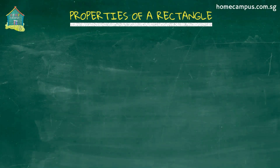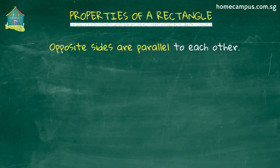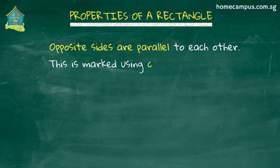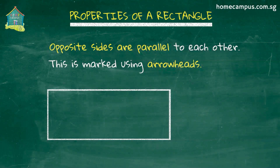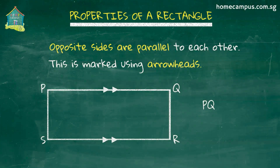The last important property of a rectangle is that a rectangle has two pairs of parallel sides. Its opposite sides are parallel to each other. This is marked using arrowheads. In this rectangle, PQ is parallel to SR. We show this by placing the same number of arrowheads pointing in the same direction on these two lines. Similarly, SP is parallel to RQ.